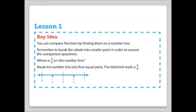Lesson 1 Key Idea: You can compare fractions by finding them on a number line. Remember to break the whole into smaller parts in order to answer the comparison questions. Where is 3 fourths on this number line? Break the number line into 4 equal parts — the third tick mark is 3 fourths.